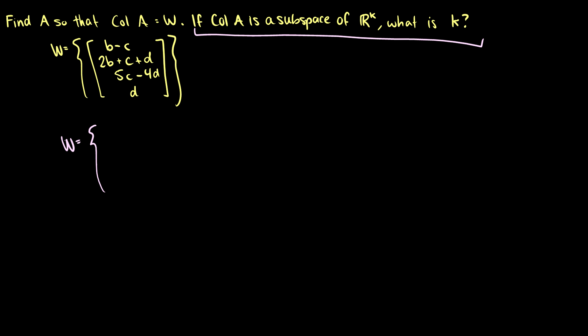So we're going to be able to factor out a b. We're going to be able to factor out a c. And we're going to be able to factor out a d. And of course, this is where b, c, and d are going to be real numbers.